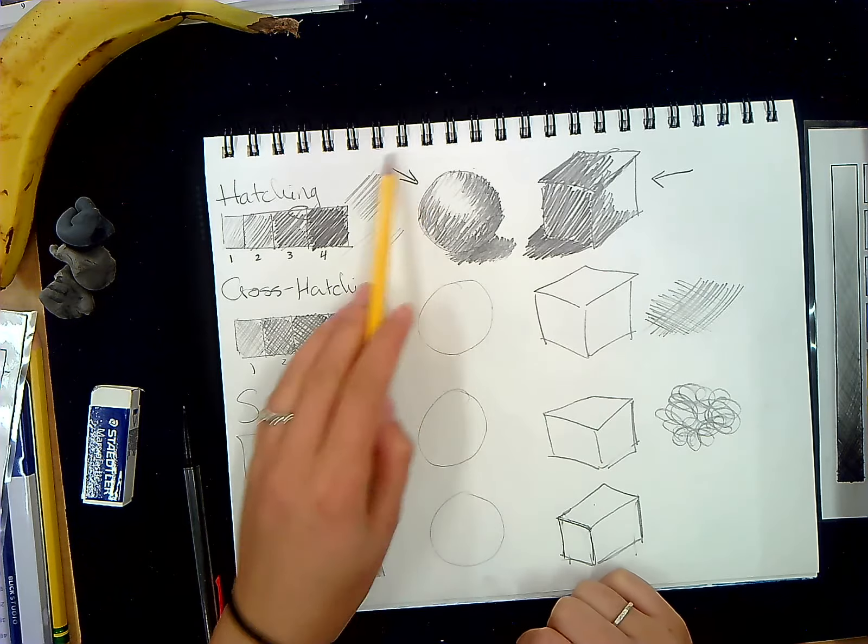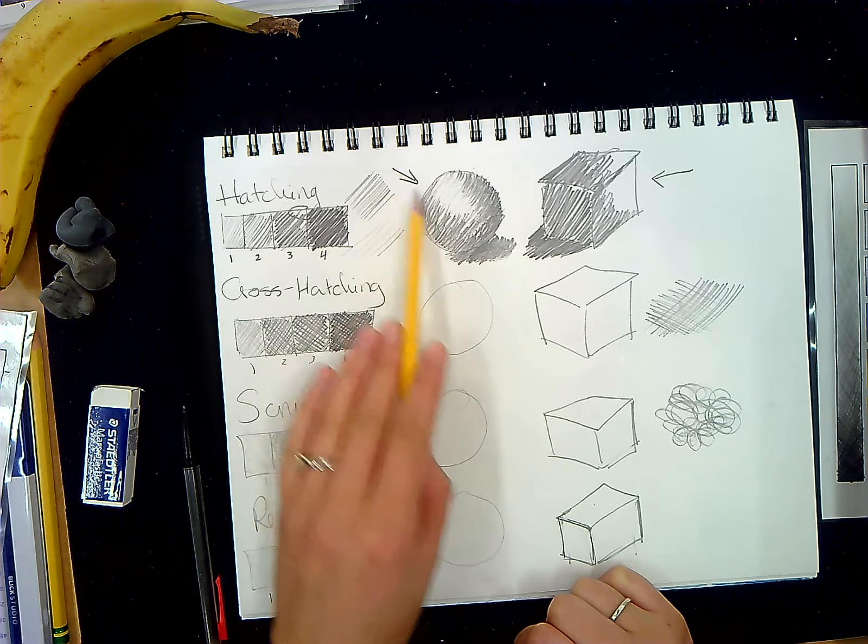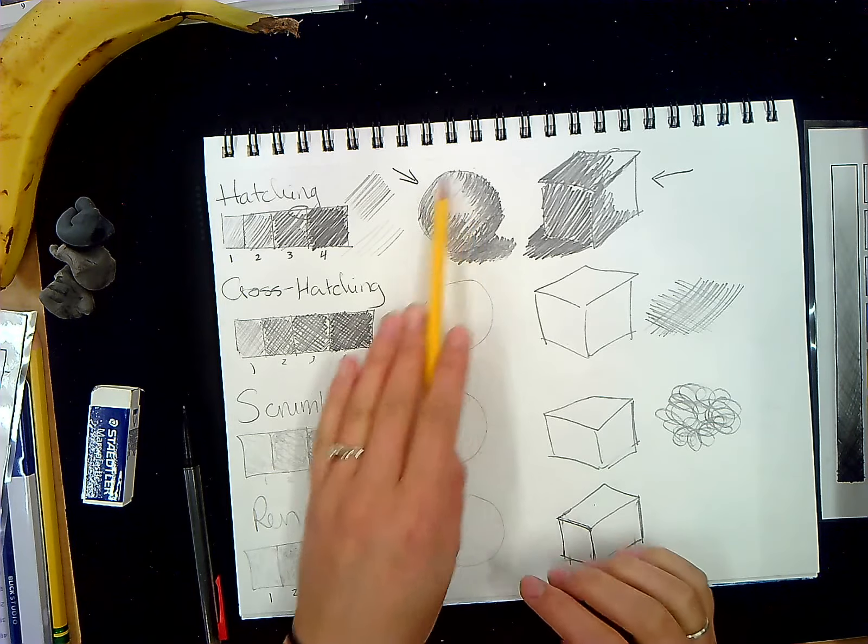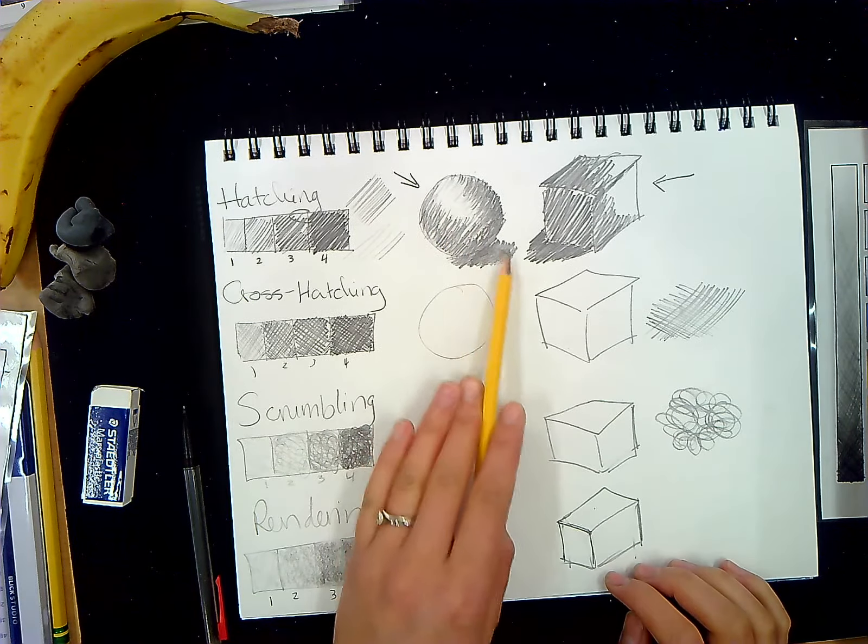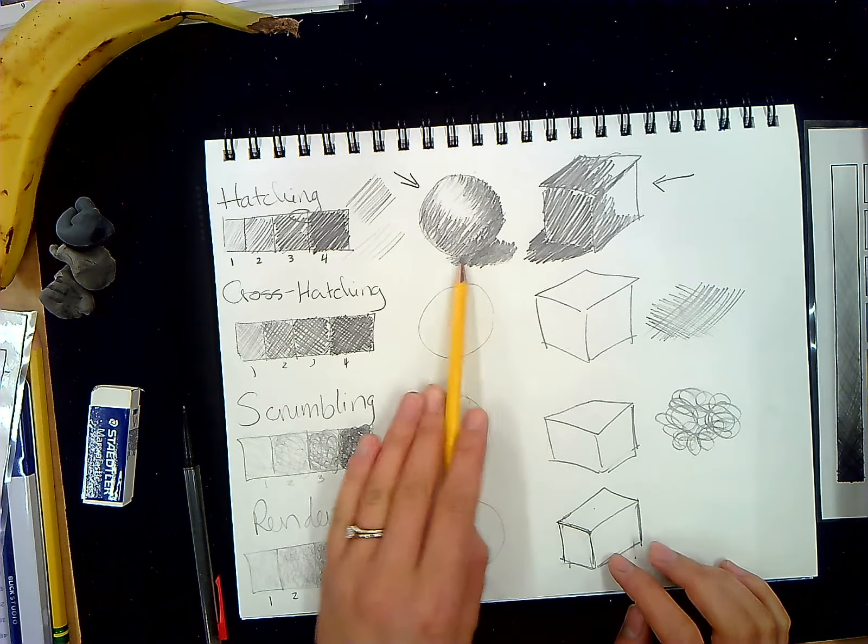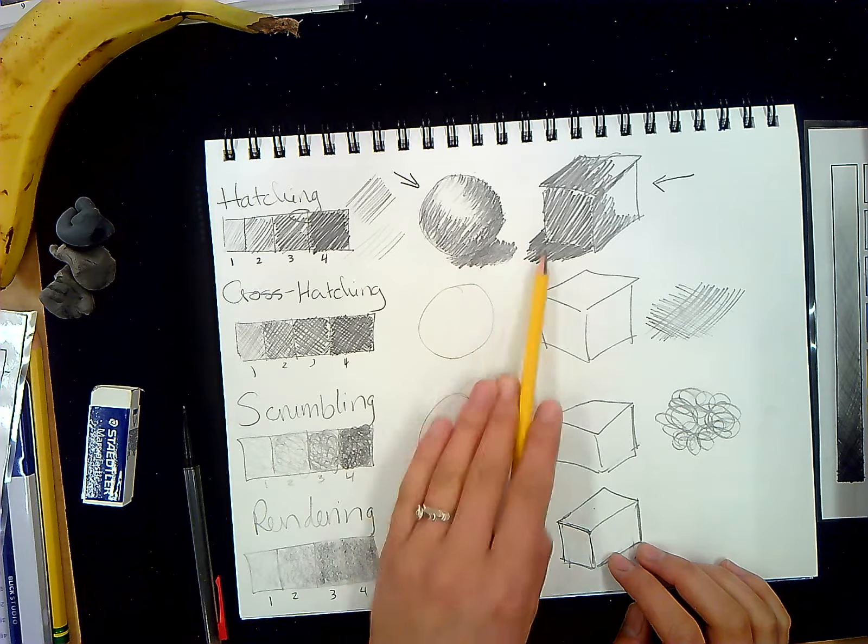Remember, you need to have a light source in there. A light source is going to dictate where the highlight or the lightest part of the object is going to be and where the cast shadow is going to fall. Remember, the cast shadow is going to dictate where space or where the object is resting or sitting.